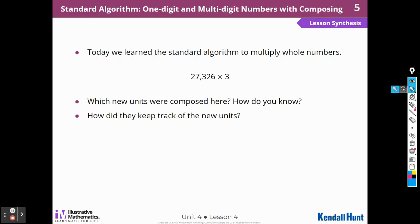They composed new tens and new 10,000s. I see a 1 above the 2 tens and a 2 above the 10,000s. And how did I keep track of it? I wrote them above the first factor in the correct place value. So if I were going to do this again, 27,326 times 3. I have to compose a new number there, 18. 2 times 3 is 6 plus 1 is 7. 3 times 3 is 9. 3 times 7 is 21. 3 times 2 is 6 plus 2 is 8. So I had to recompose the new tens and compose new 10,000s.